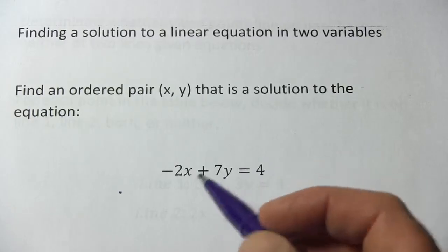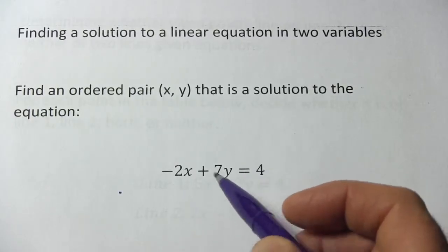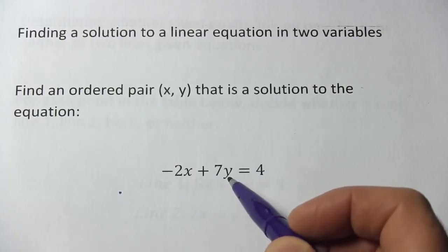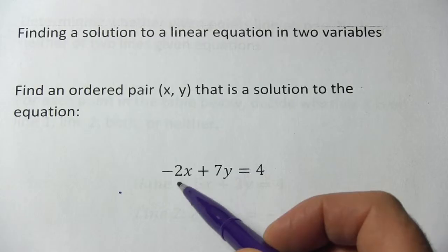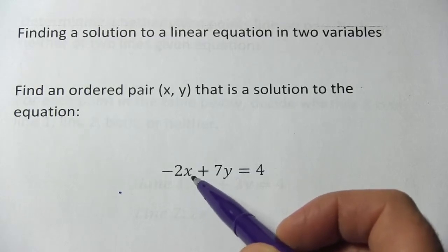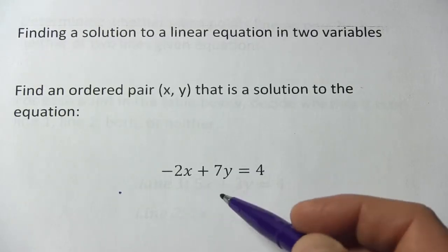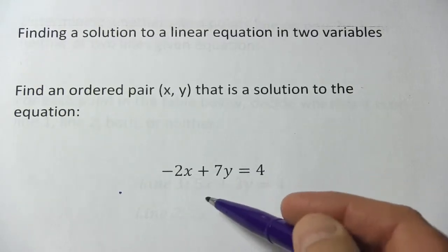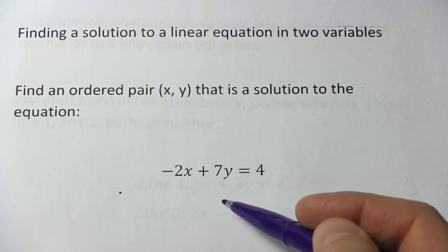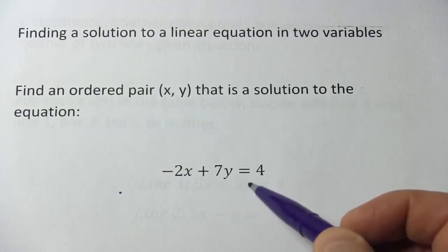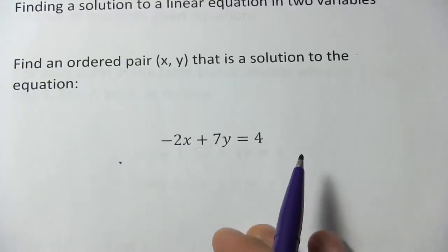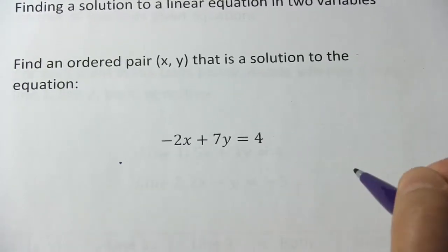Well, I like to just choose some value for one of these variables and then calculate and solve for the other variable. I think it's easiest to put in zero for either x or y. I think I'm going to put in zero for y.